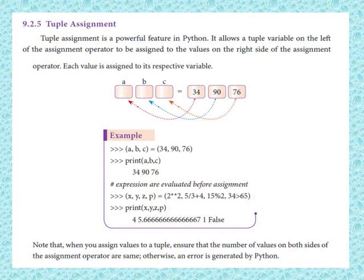Expressions are evaluated before assignment, so we can use expressions too. In the first example we can assign a single element. We can use variables x, y, z, p — four variables with four expressions: 2 to the power of 2, 5 divided by 3 plus 4, 15 modulus 2, and 34 greater than 65. We can check this condition and print it.